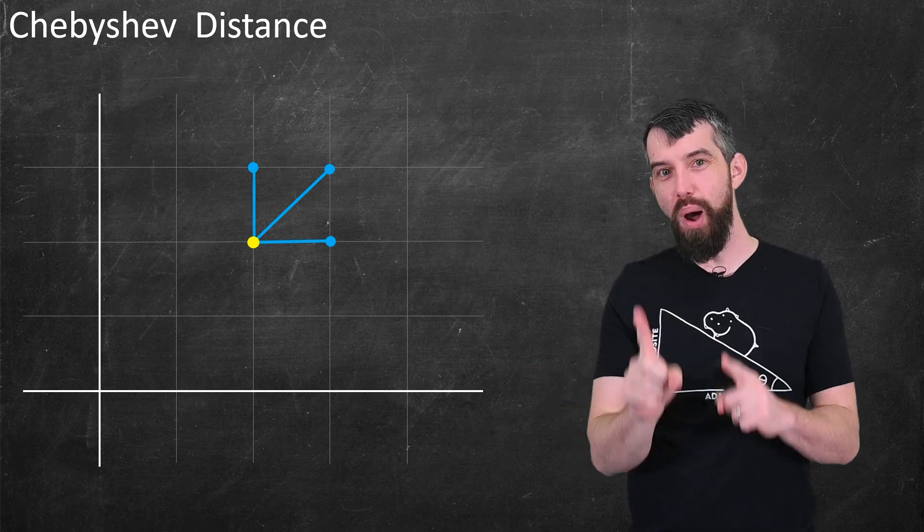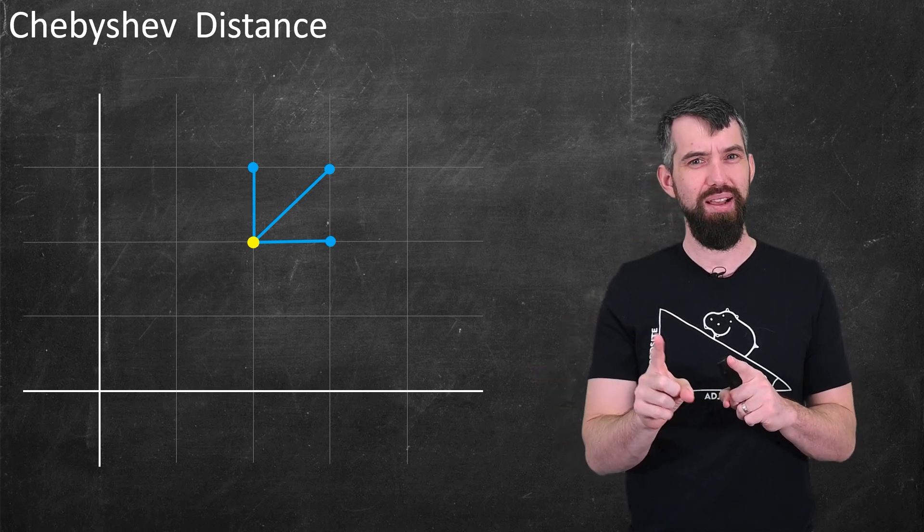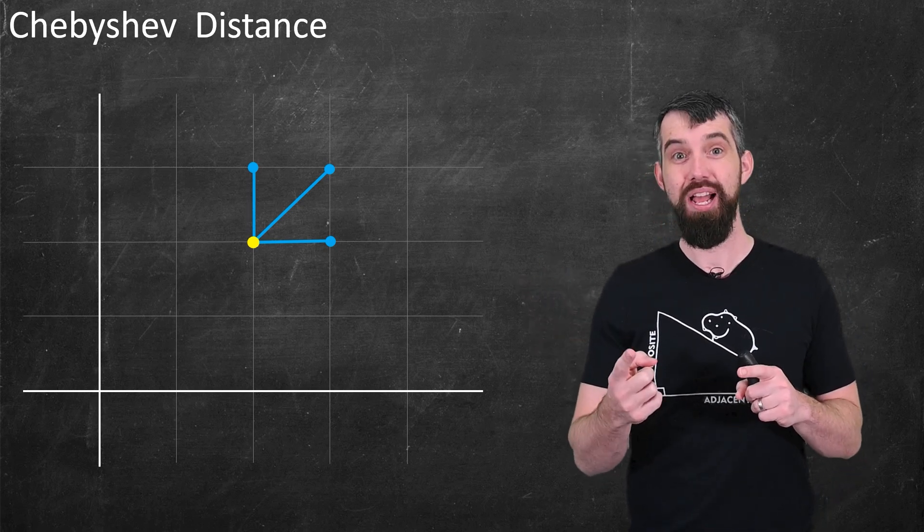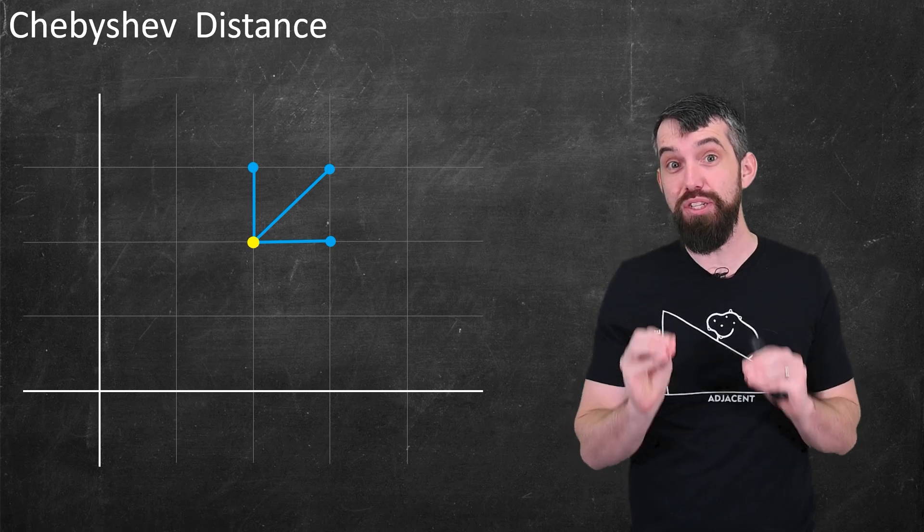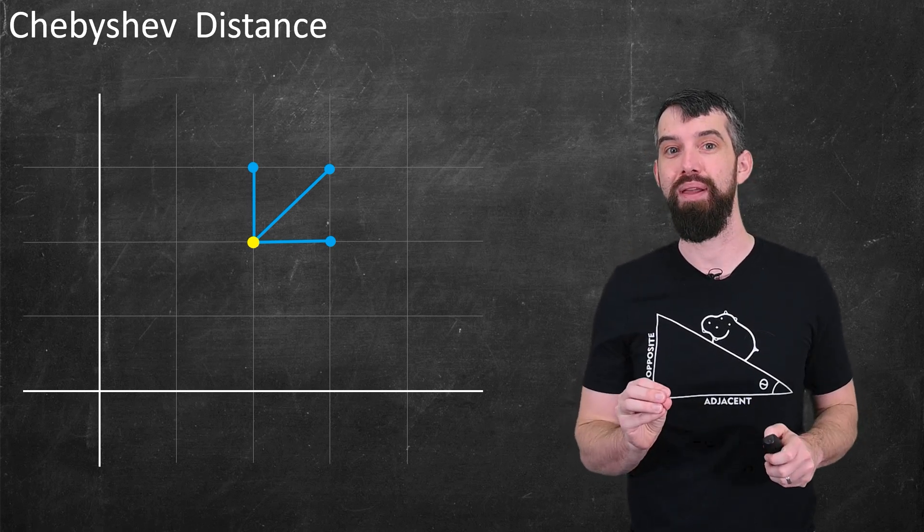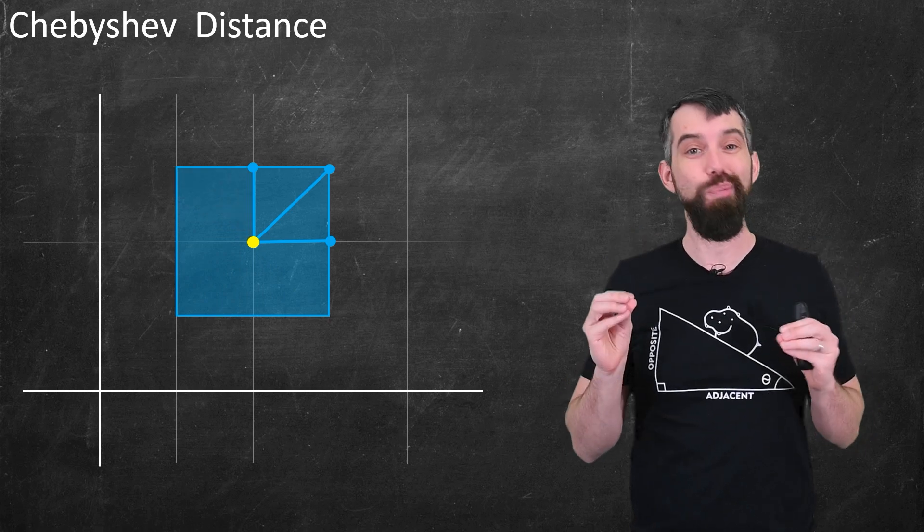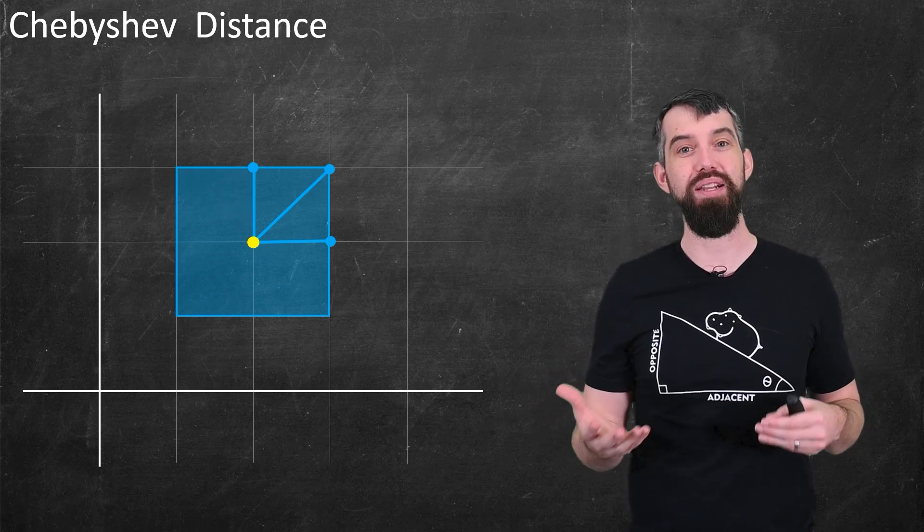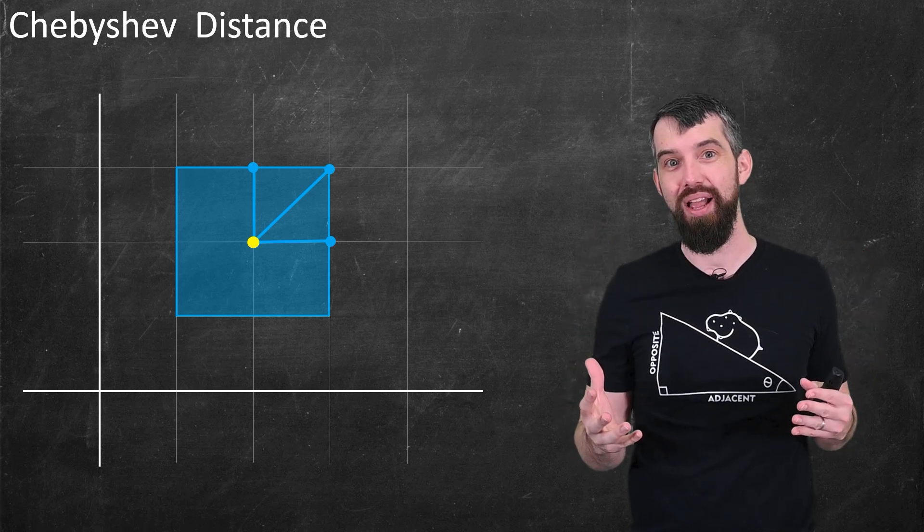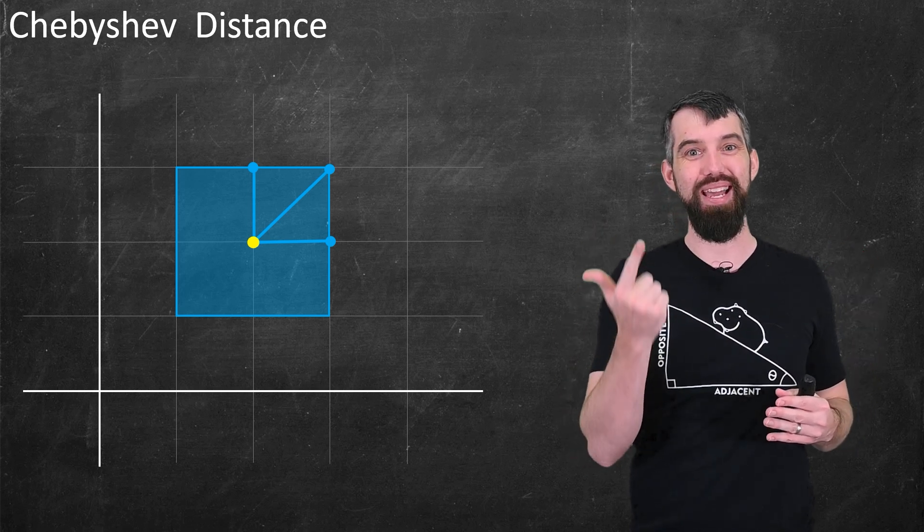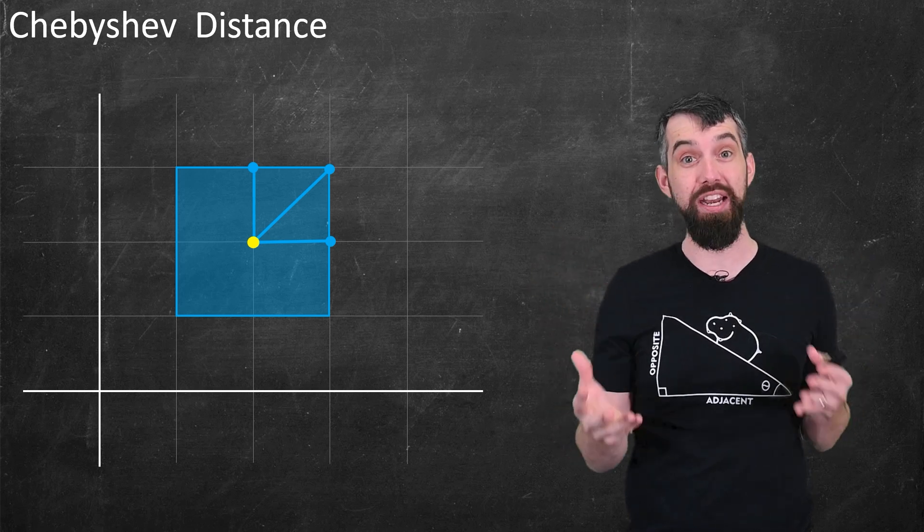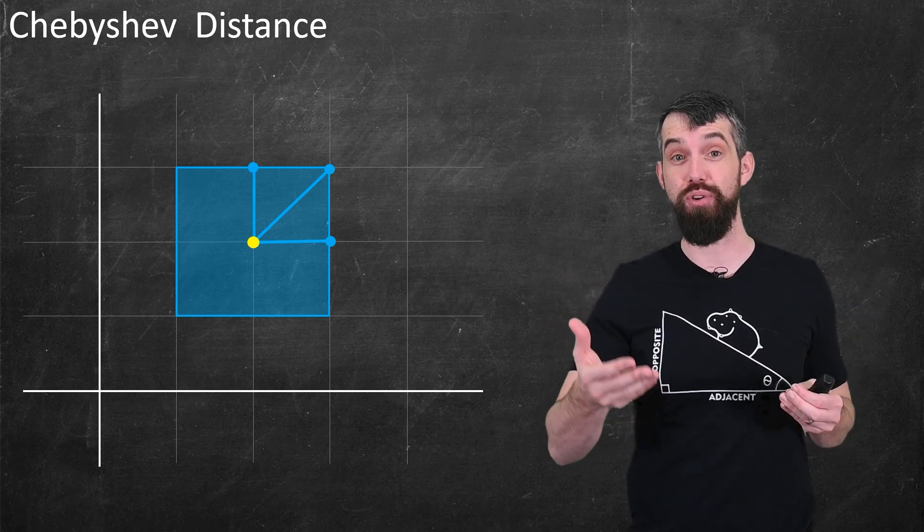You might have a moment of pause here because you say, well, hold on, in Euclidean distance, that diagonal one has a distance of root two. But the point is, this is a different measure of distance. Under this measure of distance, that's a distance of one. And so in fact, the unit ball of radius one is, well, all of these points, this entire square. So we've seen a circle, a diamond, and a square for sort of three different open balls of radius one around a point, depending on which metric we're in.